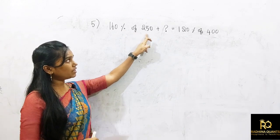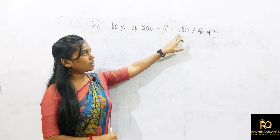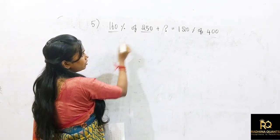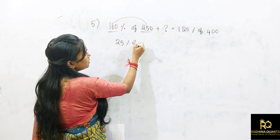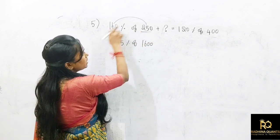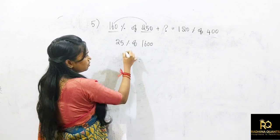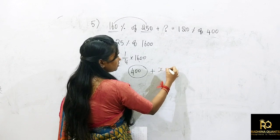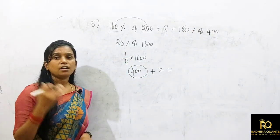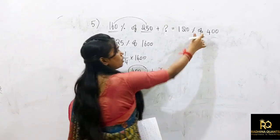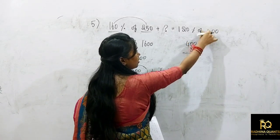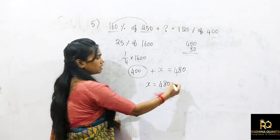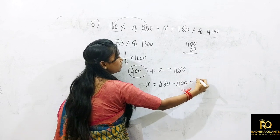Next: 160% of 250 plus question mark equals 120% of 400. For 160% of 250: interchange to 25% of 1600, which is 1/4 of 1600 = 400. The first part is 400 plus x. For 120% of 400: that is 100% + 20% = 400 + 80 = 480. So 400 + x = 480, which means x equals 80.